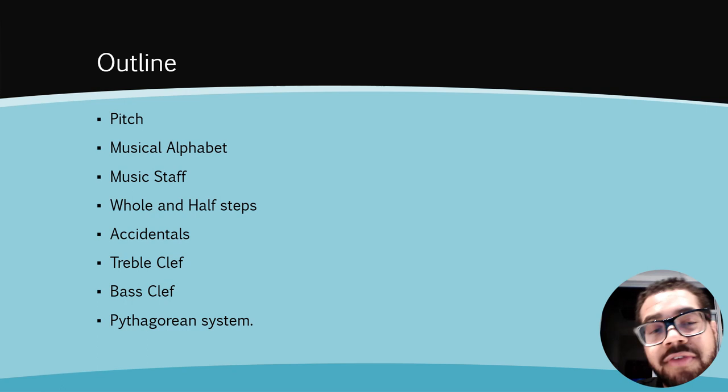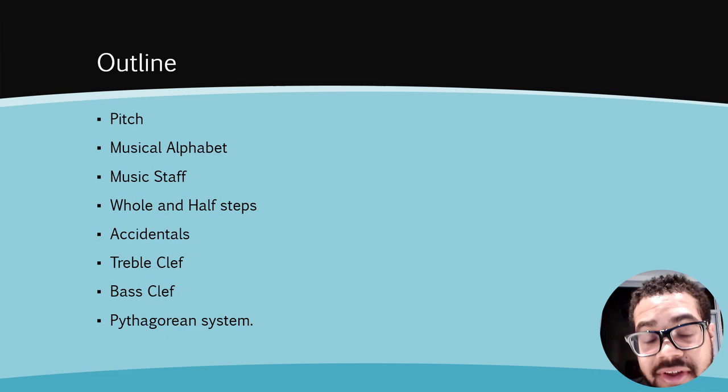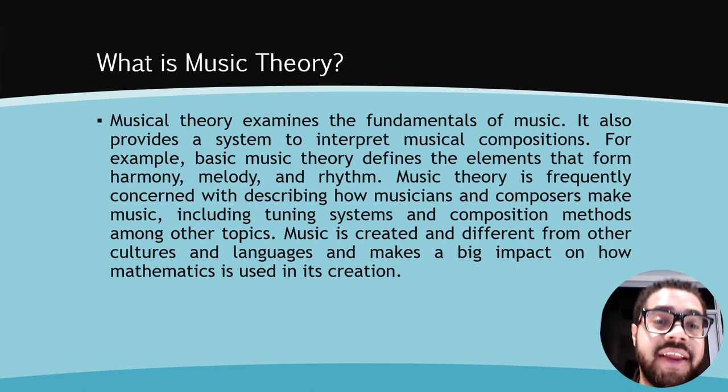These are the few outlines that I will be talking about that correlate with music theory and mathematics. One, pitch. Two, musical alphabet. Three, music staff. Four, whole and half steps. Five, accidentals. Six, treble clef. Seven, bass clef. And eight, the Pythagorean system.